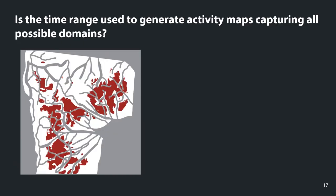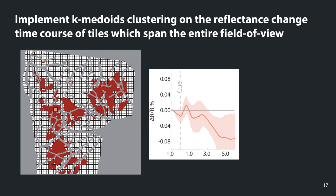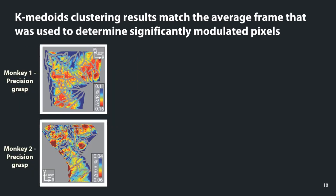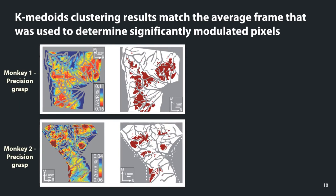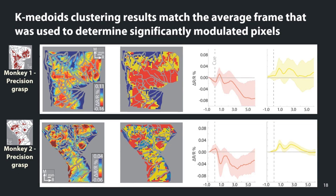To verify whether the time range used to generate activity maps was appropriate, we implemented k-medoids clustering on the reflectance change time course of tiles overlaid in a grid on the field of view. K-medoids clustering uses a correlation coefficient metric to determine distance between points, finding the optimal number of clusters and grouping tiles accordingly. The clustering results match the significant pixels from the t-tests very well, and the average time course of tiles within the active cluster shows a clear increase in negative reflectance, while other groupings show an increase in positive reflectance.